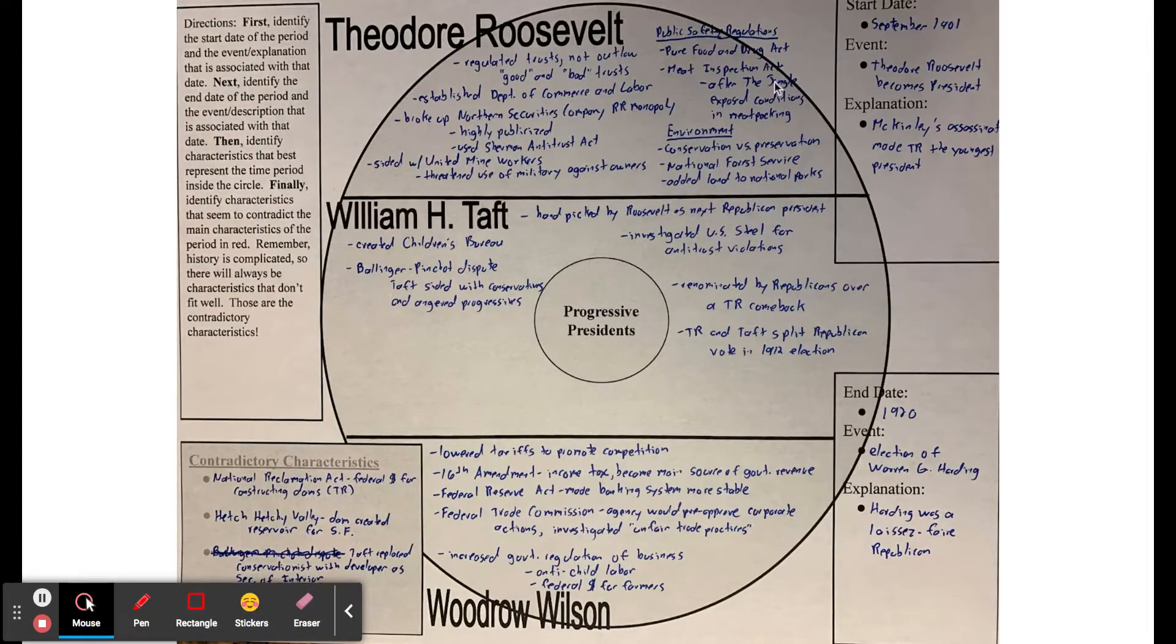Then we have the Meat Inspection Act. This is probably pretty famous because it came about as a result of a book called The Jungle written by a muckraker, which really exposed the terrible conditions in the meat packing industry. The Meat Inspection Act meant that the federal government, the United States Department of Agriculture, was inspecting meat to make sure it was safe to eat. If you go to the grocery store today and buy ground beef, it'll have a stamp on it saying USDA inspected. That's a result of the Meat Inspection Act.